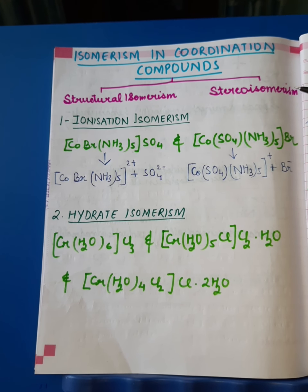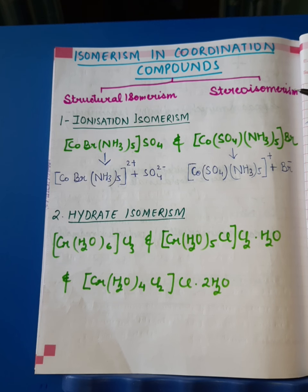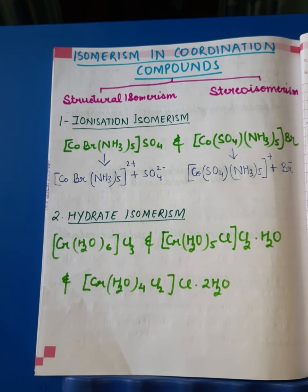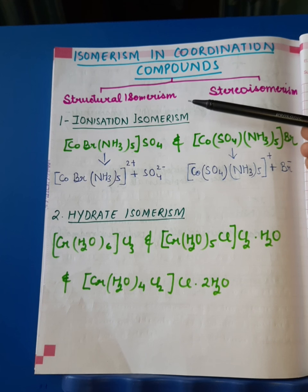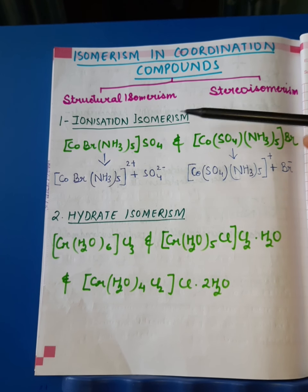Structural isomerism, as you know very well, is due to the fact that when two or more compounds have the same molecular formula but present different structural arrangements. The same situation is seen in coordination complexes as well. Structural isomerism in coordination compounds is of five types.